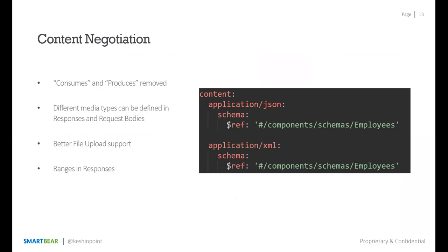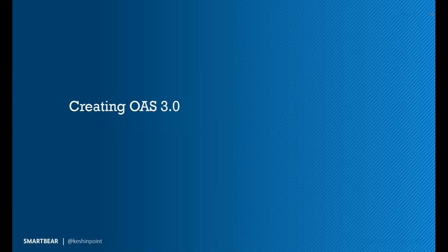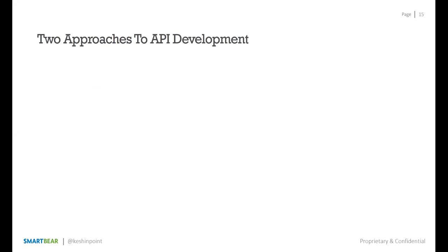OAS 3.0 also supports content negotiation — allowing your API to support media type negotiation between clients and servers. The 'consumes' and 'produces' objects from Swagger 2.0 have been removed. Now you can define different media types directly in your responses and requestBody schemas — for example, 'application/json' with one schema and 'application/xml' with another. We've also done a previous webinar on defining OAS 3.0 definitions, available free on YouTube.